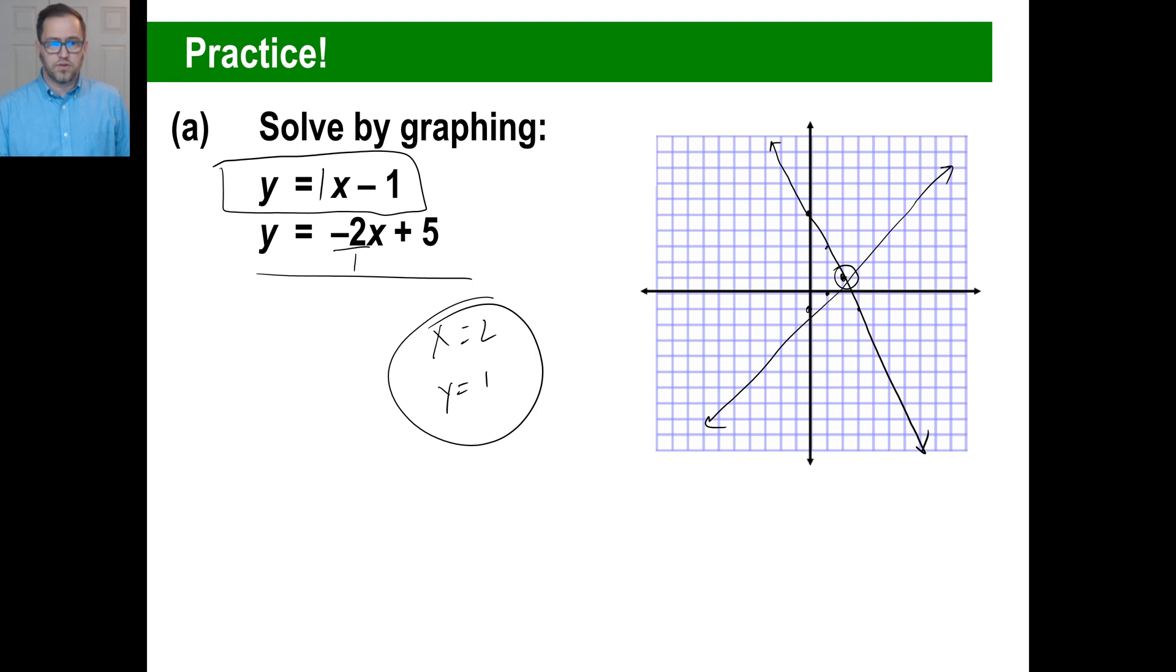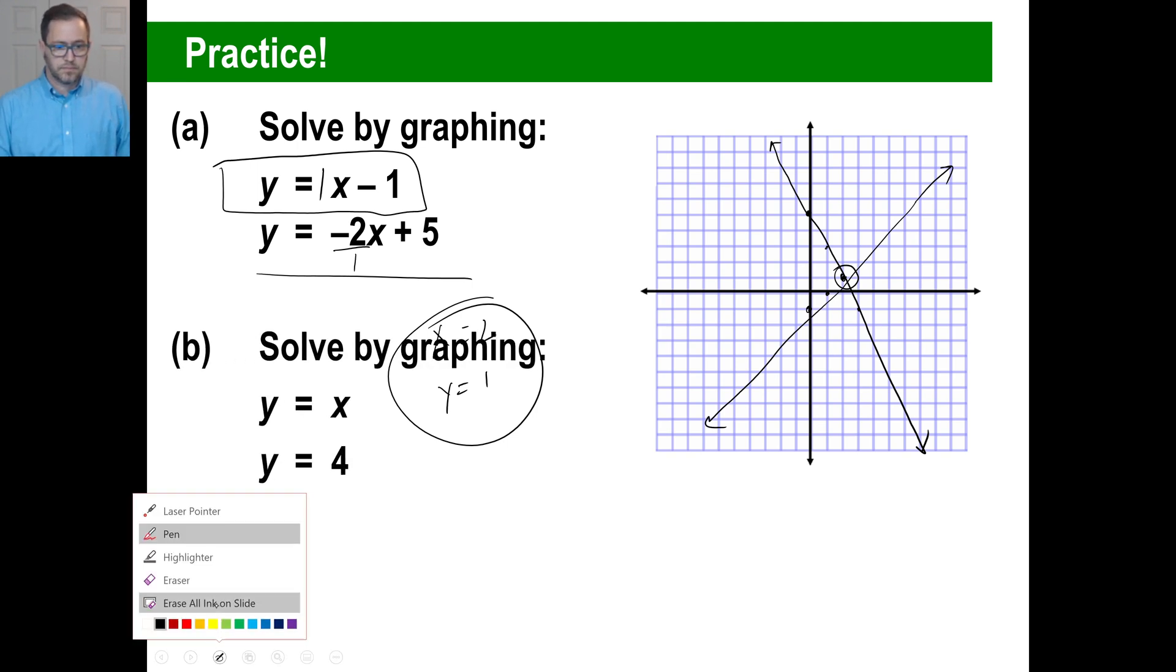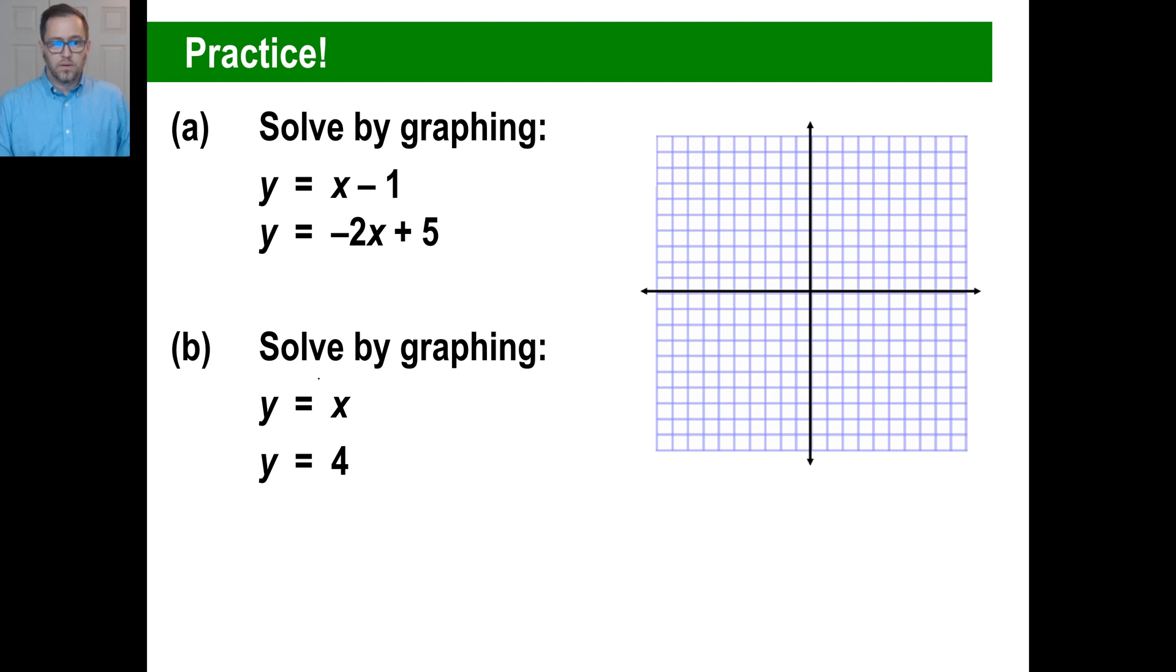Go ahead and pause it and try b. All right, well, y equals x. That's again, like a 1x plus a 0, so your y intercept is 0. Your slope is 1, so 1 up, 1 over, 1 over, 1 over, and so on. So it looks like that.